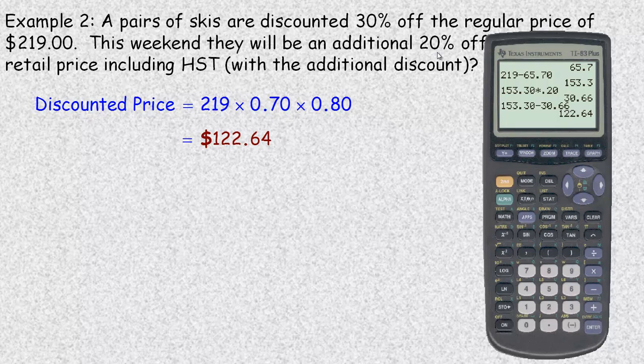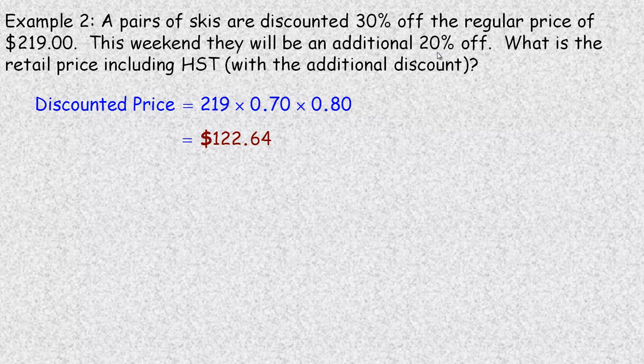That is a little longer way to do it, but you do get to see exactly what the discounts are. The discounts are $65.70 and then another $30.66. So the discounted price is $122.64 after those two discounts.